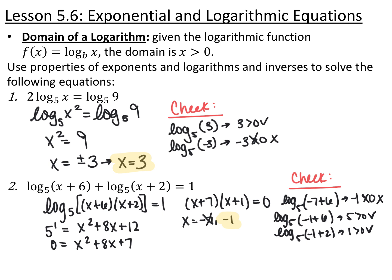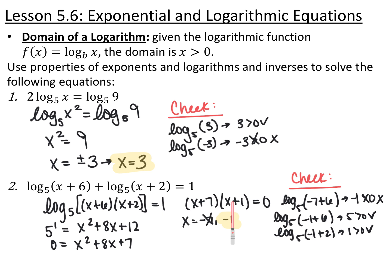I switch into exponential form — base stays the same, input and output switch — so I get 5 to the first power equals x squared plus 8x plus 12. Now I have a quadratic. I subtract 5 from both sides to get one side equal to zero, and it factors into (x+7)(x+1), which means x can be either negative 7 or negative 1.